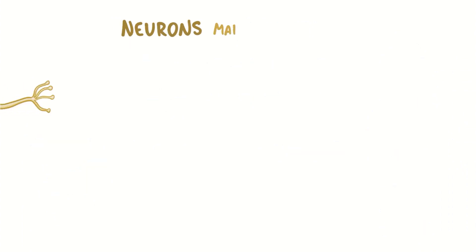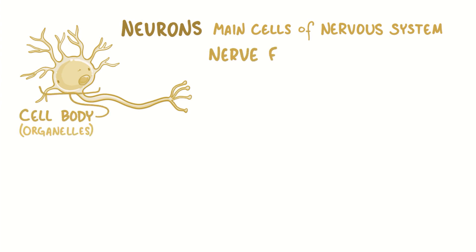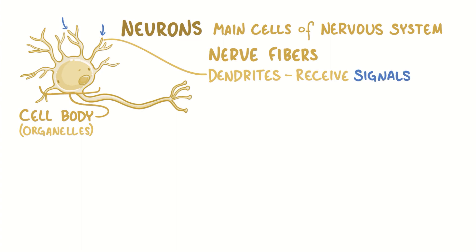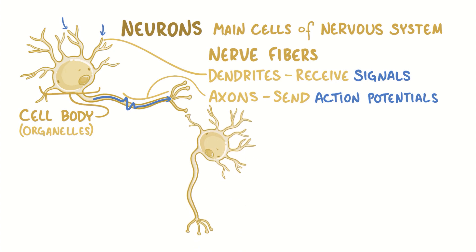Now, neurons are the main cells of the nervous system, and they're composed of a cell body which has all of the cell's organelles, and nerve fibers which are projections that extend out from the neuron's cell body. Nerve fibers are either dendrites that receive signals from other neurons, or axons that send signals called action potentials along to other neurons.